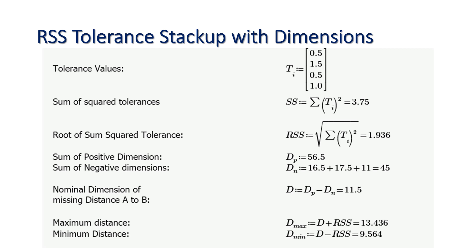And the minimum distance is D, that nominal adjusted difference dimension of the missing distance A to B, minus RSS. That is equal to 9.564.